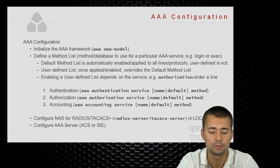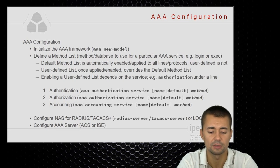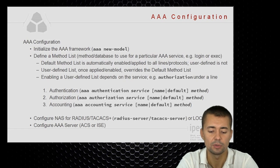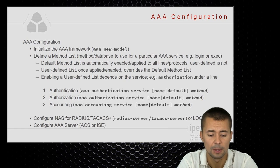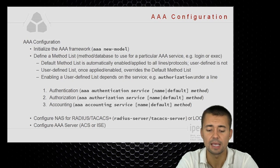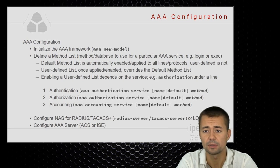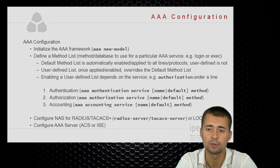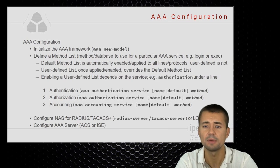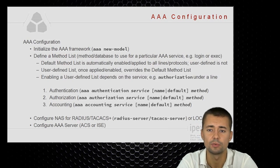Syntax-wise, the command starts with 'aaa,' then the function we want to enable. We define the service we want to authenticate, authorize, or account for, then define the list name, and finally select a method — where a method is the database we want to use, such as the local database, RADIUS, or TACACS+ protocols.